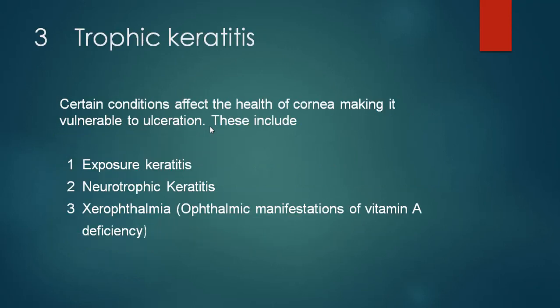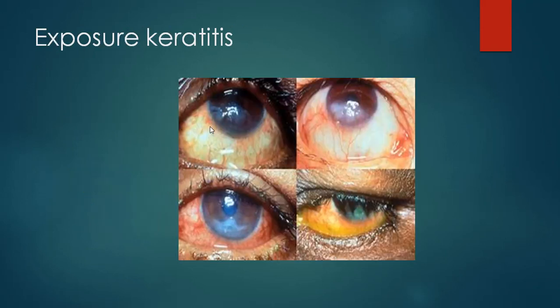The third group of diseases we are covering today are trophic keratitis — conditions which affect the health of the cornea making it vulnerable to ulceration. These include exposure keratitis, neurotrophic keratitis, and xerophthalmia, which stands for the ophthalmic manifestations of vitamin A deficiency. On this slide you see different eyes with involvement in the lower area at the 6 o'clock position where the cornea has become hazy, with ulceration and vascularization also seen in one or two eyes.